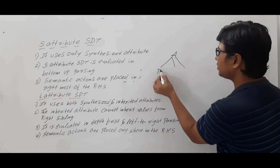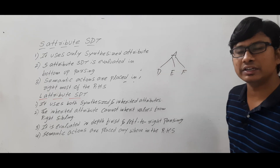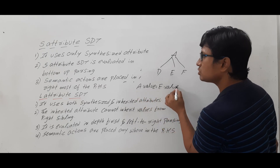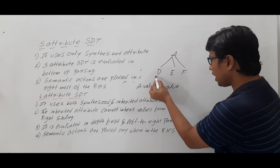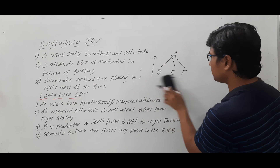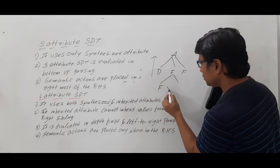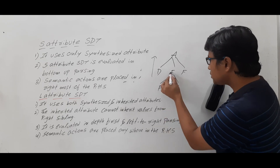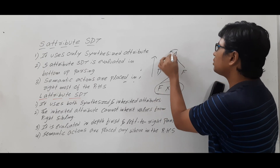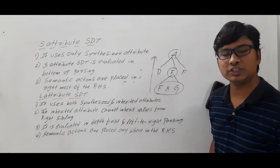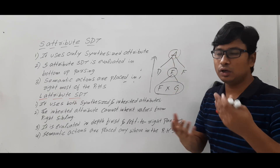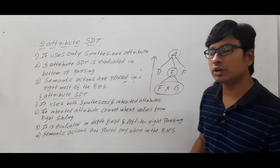Why bottom-up parsing? For A → DEF, A's value depends on its children: A.value = E.value, since it uses synthesized attributes. So first I need to evaluate E. Suppose E → F×G; then E's value depends on F and G, so I evaluate the leaf nodes first, then the intermediate nodes, then the root node. This is bottom-up parsing — evaluate leaf nodes first, move up to the root.